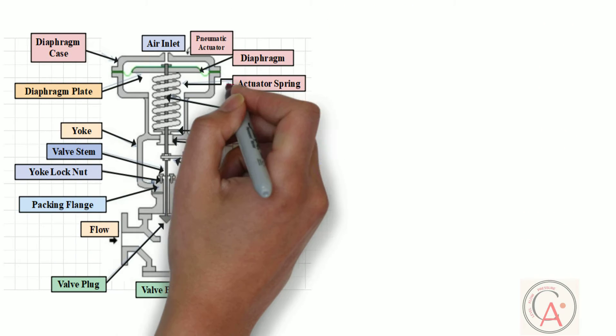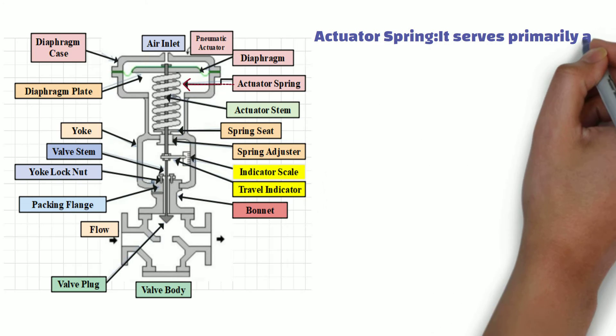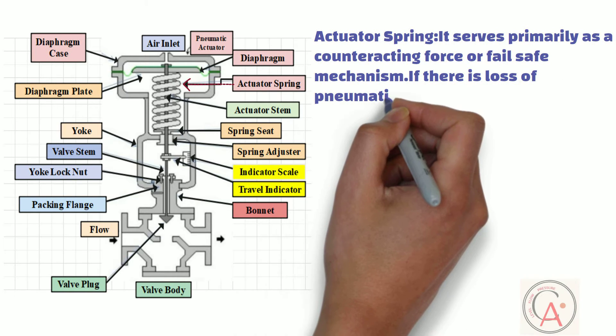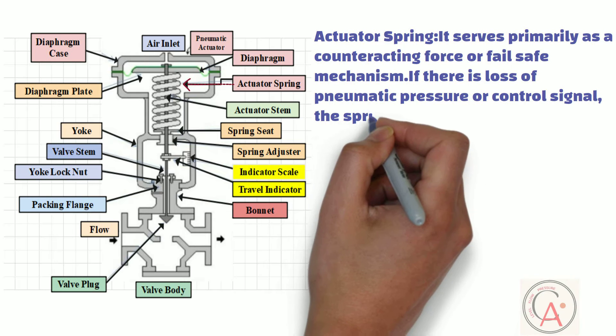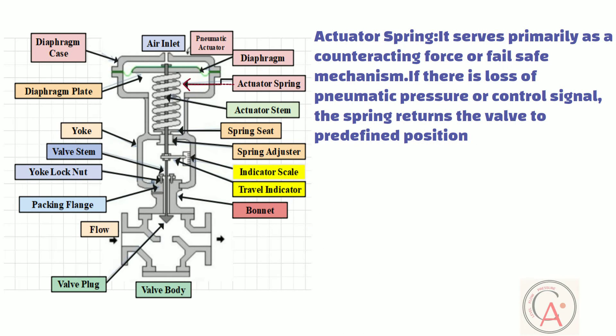Another important part is the actuator spring. The spring within the actuator serves primarily as a counteracting force or fail-safe mechanism. If there is a loss of pneumatic pressure or control signal, the spring returns the valve to a predefined position, usually fully open, fully closed, or a specified intermediate position.